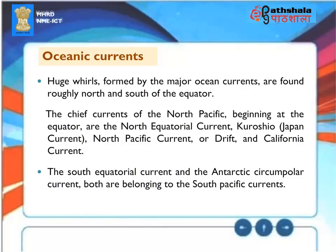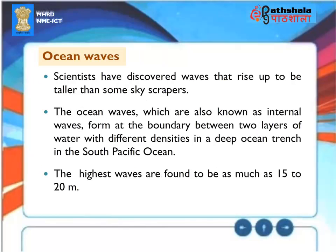Oceanic Currents and Waves: Huge gyres formed by major ocean currents are found roughly north and south of the equator. The chief currents of the North Pacific, beginning at the equator, are the North Equatorial Current, the Kuroshio-Japan Current, the North Pacific Current or Drift, and the California Current. The South Equatorial Current and the Antarctic Circumpolar Current both belong to the South Pacific. Scientists have discovered internal waves in a deep ocean trench in the South Pacific that rise up to be taller than skyscrapers, with the highest waves measured at 15 to 20 meters.